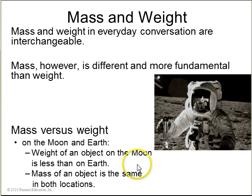On the Moon or on the Earth, the weight of an object on the Moon is less than the weight of the object on Earth. So, if this astronaut is holding up these objects, it'll be easier to hold it. However, the mass is the same on both locations. So, if you're trying to shake it back and forth, it would be just as hard on the Moon as it would be on Earth.